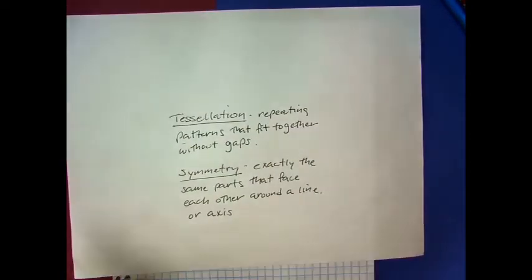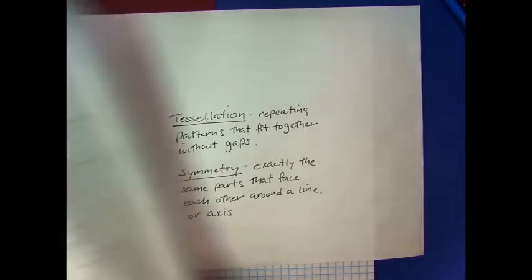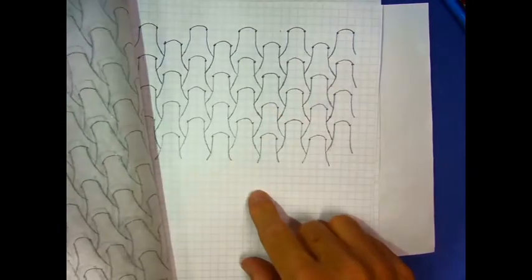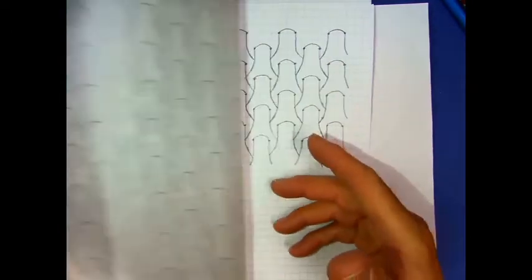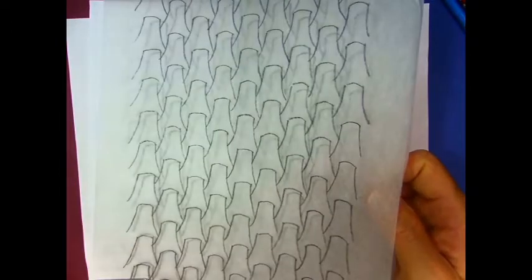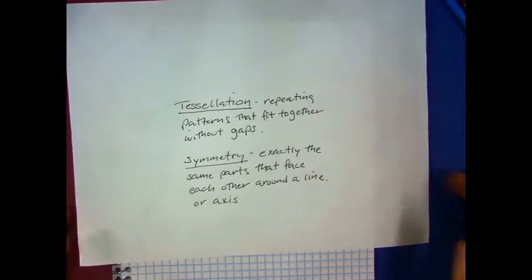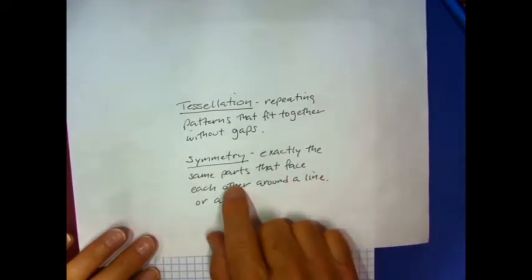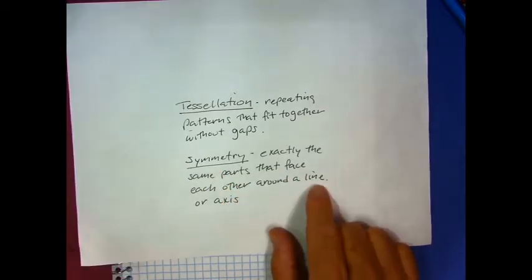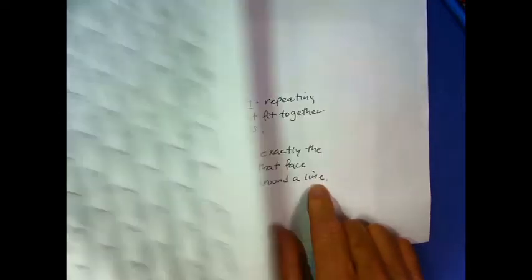If you remember a couple weeks ago, we did some tessellation where we took a pattern and we repeated that pattern. That pattern also had symmetry and we started out with drawing our pattern on some grid paper. We removed the background of the grid paper by tracing that pattern. And then we colored that pattern in. Now that pattern repeated itself in a very orderly way. We're going to look at symmetry, which is exactly the same parts that face each other around a line. Our tessellation was around lines.